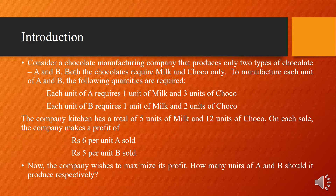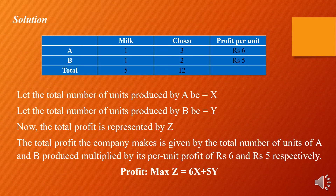The company wishes to maximize its profit. How many units of A and B should it produce respectively? This real-life problem can be put in mathematical format. The products are chocolate A and chocolate B. One unit of milk and three units of cocoa are required for A production, and one unit of milk and two units of cocoa for B. The profit per unit for A is rupees six, and for B it is rupees five. Total milk available is five units and cocoa total available is twelve units.